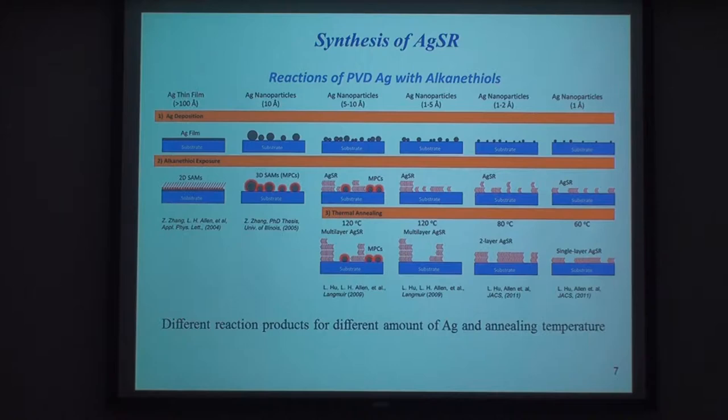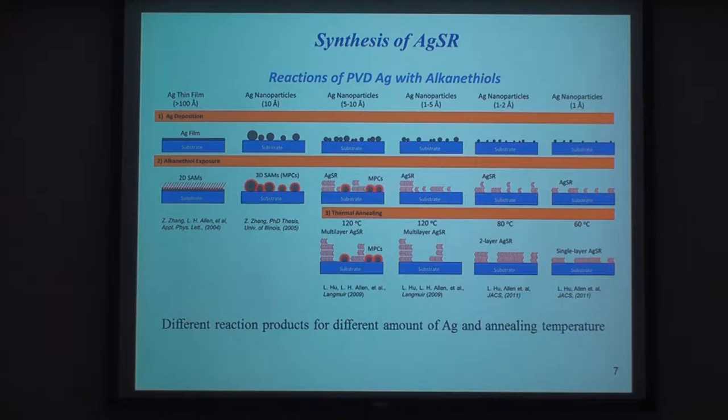For the material I worked with—silver alkane thiolate, AgSR—the synthesis comes from our study of the reaction of silver with alkane thiols over the years. What we found is that the product formed in the reaction of silver with alkane thiol depends on how much silver we have. For example, if you have a thin continuous film of silver and expose it to alkane thiol, it's just the same as the reaction of a thin film of gold with alkane thiol, and you form self-assembled monolayers of alkane thiol on the silver film.